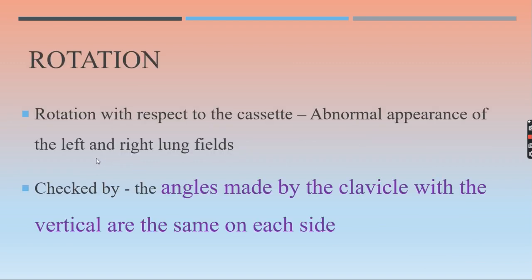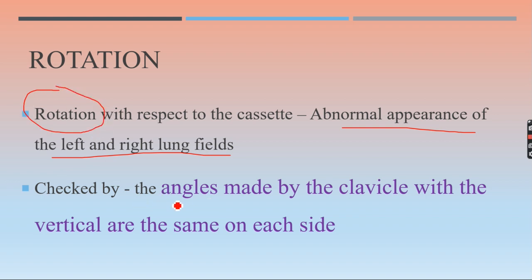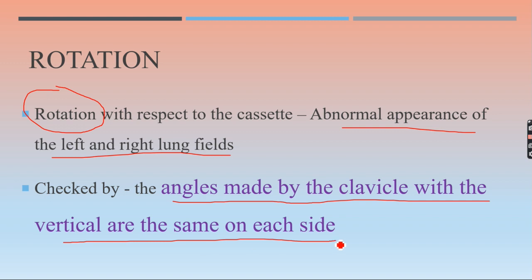R is for rotation — with respect to the cassette/film. Rotation causes abnormal appearance of the left and right lung fields and should be checked. The angles made by the clavicle with the vertical should be the same on each side. We can indirectly measure the distance between the midline and the external end of the clavicle on both sides — if the lengths are equal on both sides, there is no rotation.